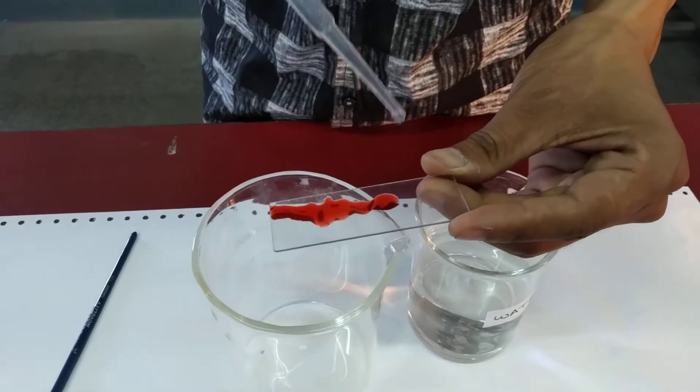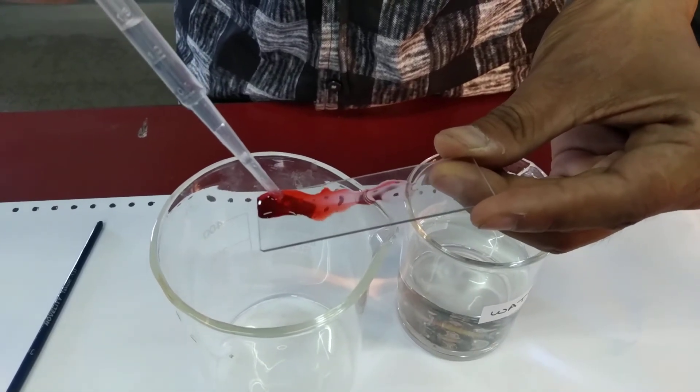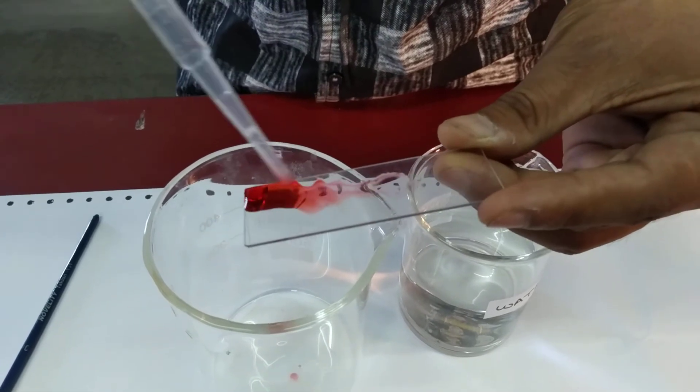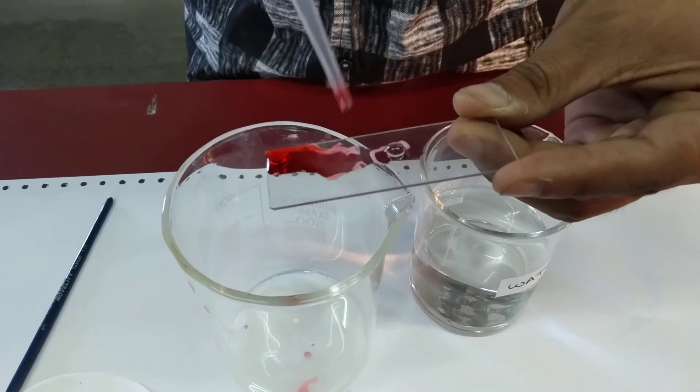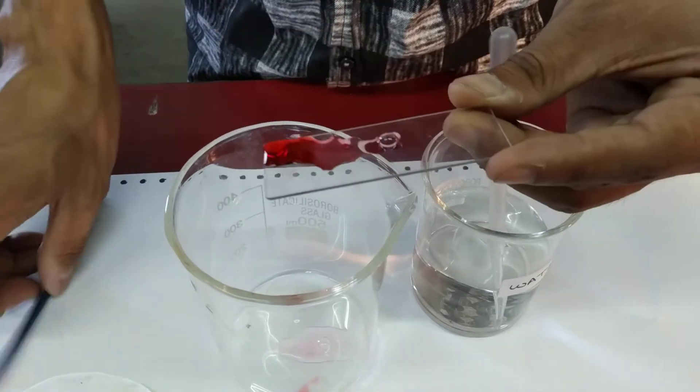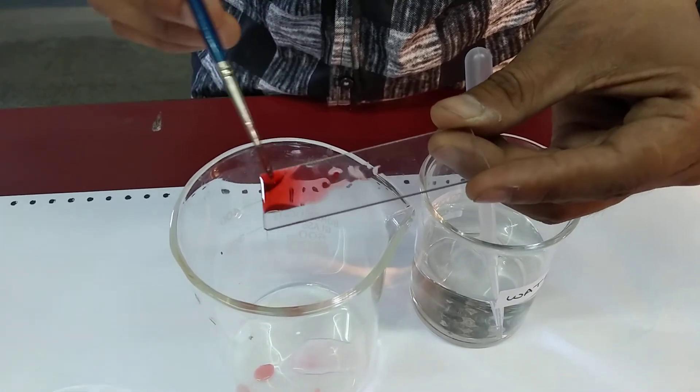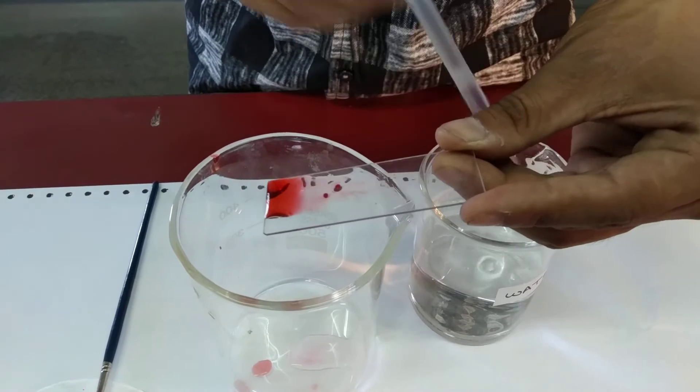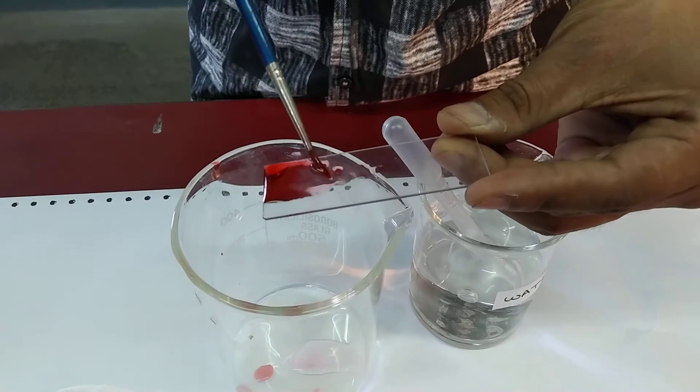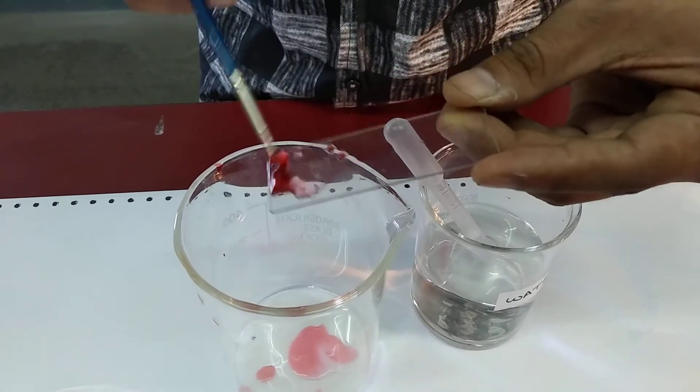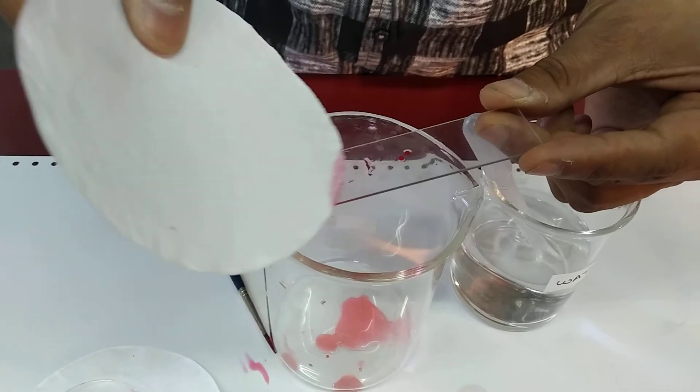After 30 to 40 seconds, slowly wash off the stain using water. When washing, make sure the sections remain on the slide. Be very careful. Wash it off two to three times. After washing off the stain, slowly dry the excess water off the slide with the help of filter paper.